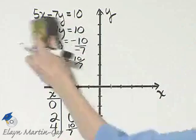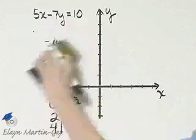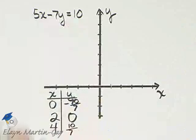Let's plot these three ordered pair solutions and let's see if they all lie along the same line. That's kind of a check for us, that third ordered pair solution.